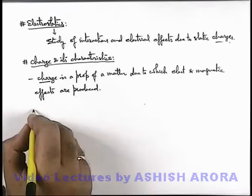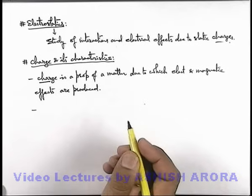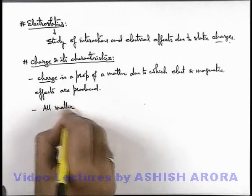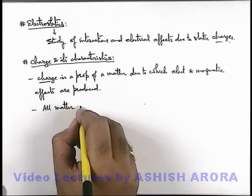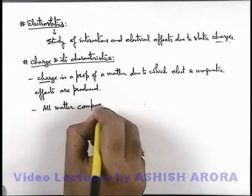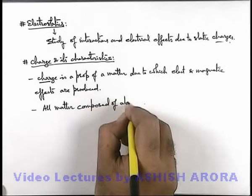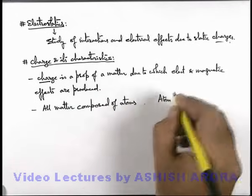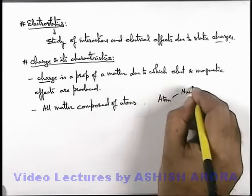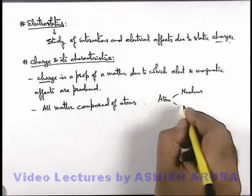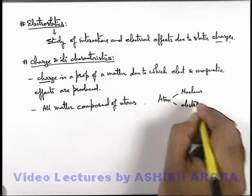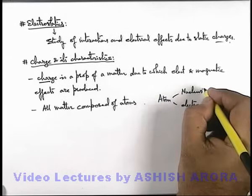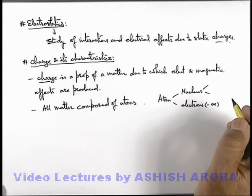We know well that all matter are composed of atoms. So we can simply state all matter in our surrounding which we can see, all matter composed of atoms. And if we talk about an atom we can simply state an atom consists of two parts: one is its nucleus and other is its extra nuclei part in which there are electrons. Electrons are negatively charged which we all know, and nucleus consists of some particles which we call nucleons.